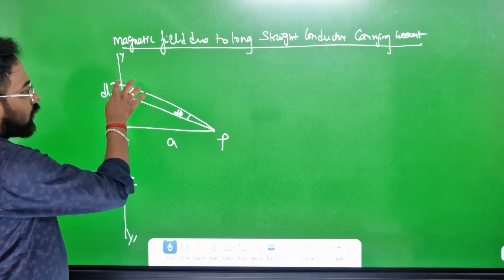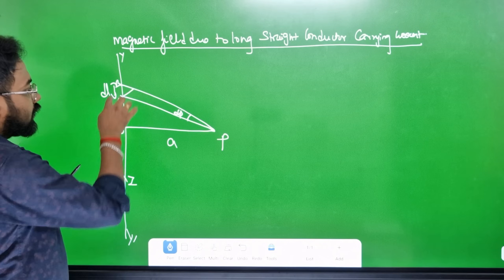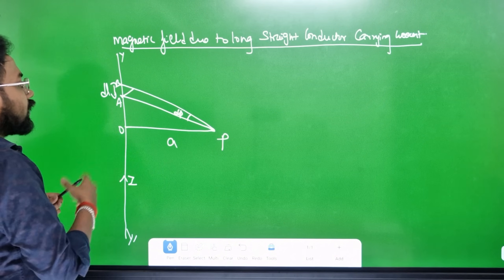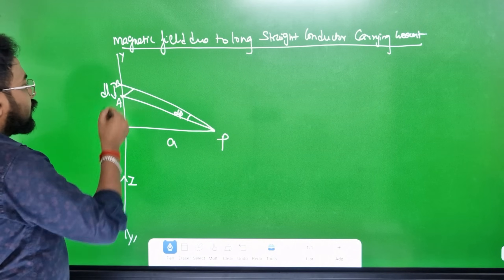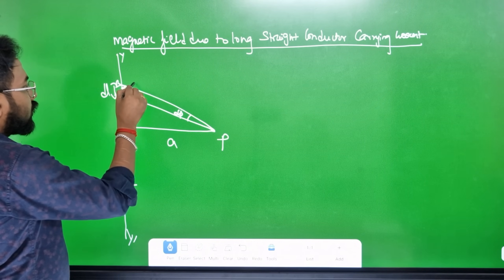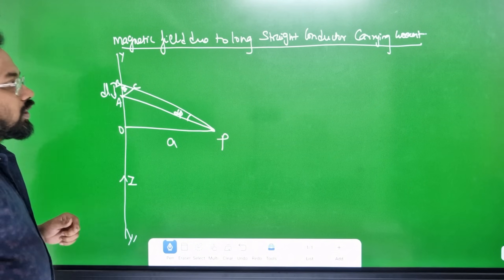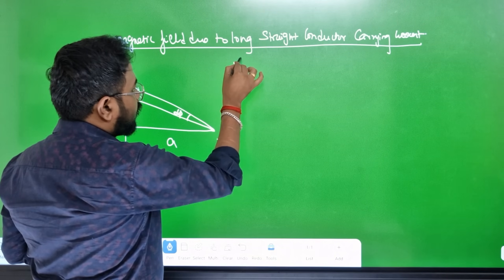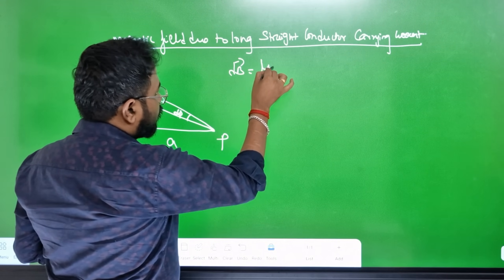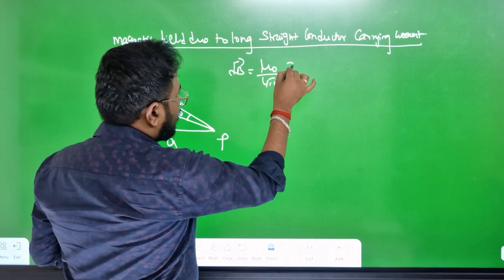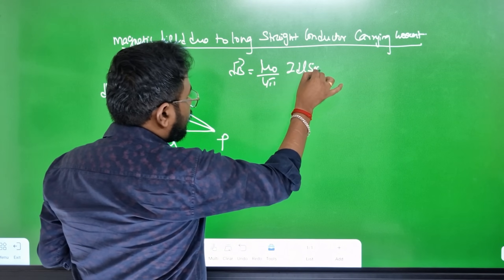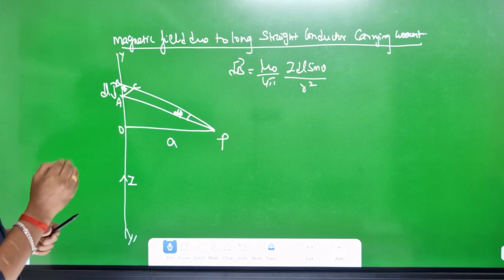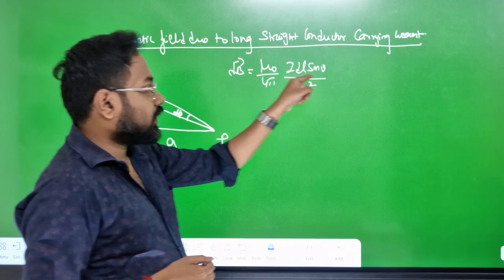I'm going to take a particular line and a triangle. The formula from Biot-Savart Law is dB equal to μ₀/4π times I·dl·sinθ divided by r squared. This is the Biot-Savart Law formula.